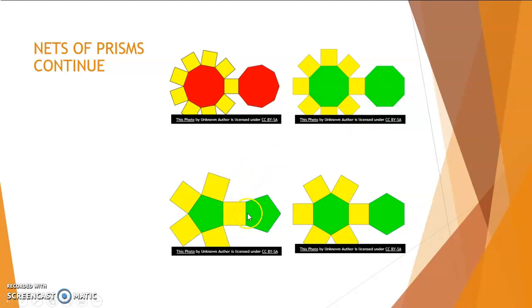The next one has five sides. So it is a pentagon. It has square side faces and two identical base faces. So it is a pentagonal prism.